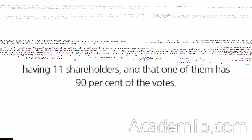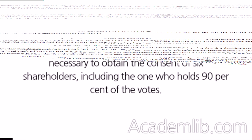As an example, let us consider a private company having 11 shareholders, and that one of them has 90% of the votes. For a short notice meeting to be held, it is necessary to obtain the consent of six shareholders, including the one who holds 90% of the votes.